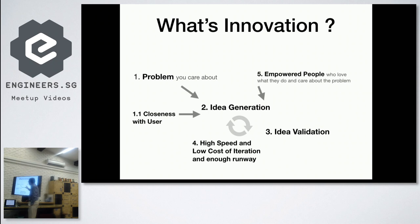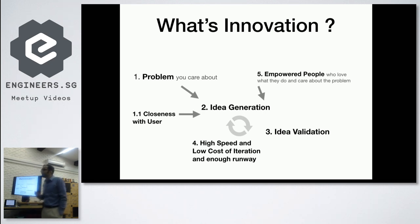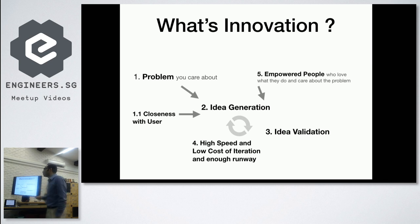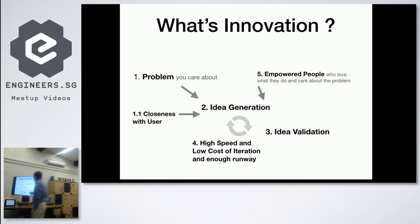Then it's basically experimentation and validation. How many experiments you can conduct depends on the cost of each experiment. If every experiment costs you a hundred thousand dollars, you'll probably only do two experiments in a year. But if every experiment costs you a thousand dollars, you'll probably do a hundred experiments — and there's a much bigger chance that you will succeed.